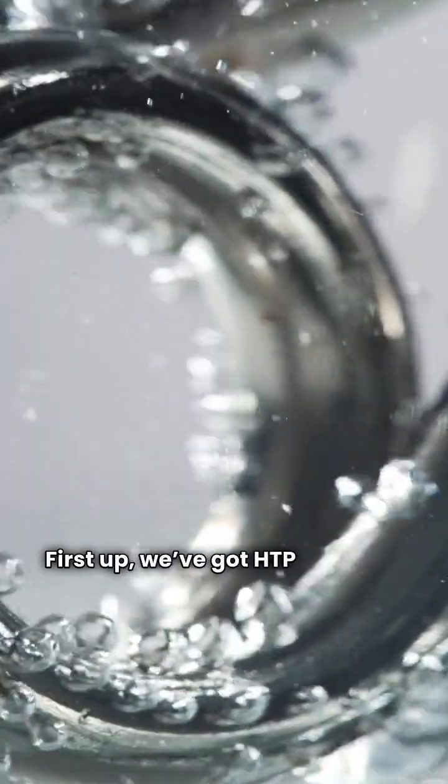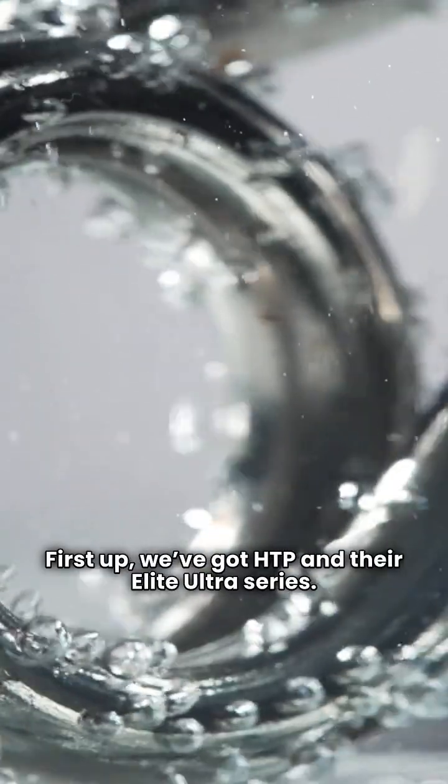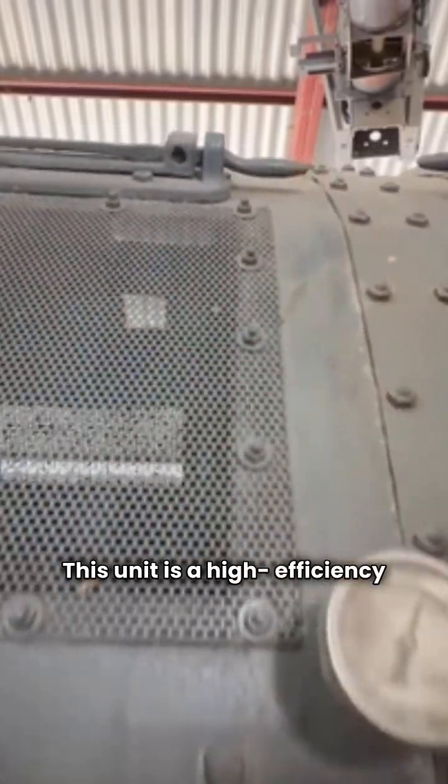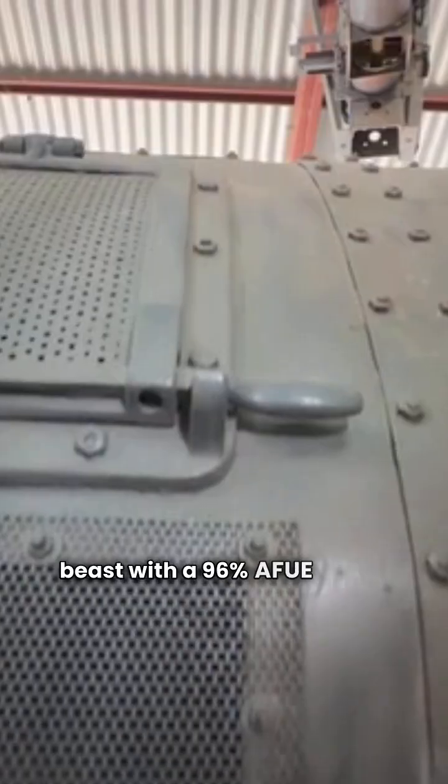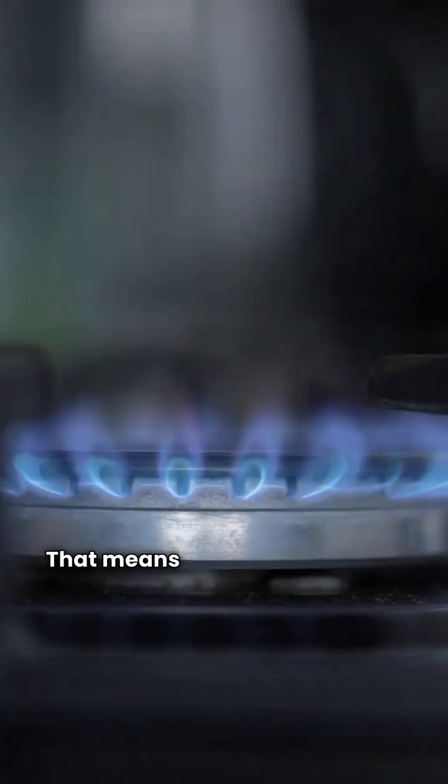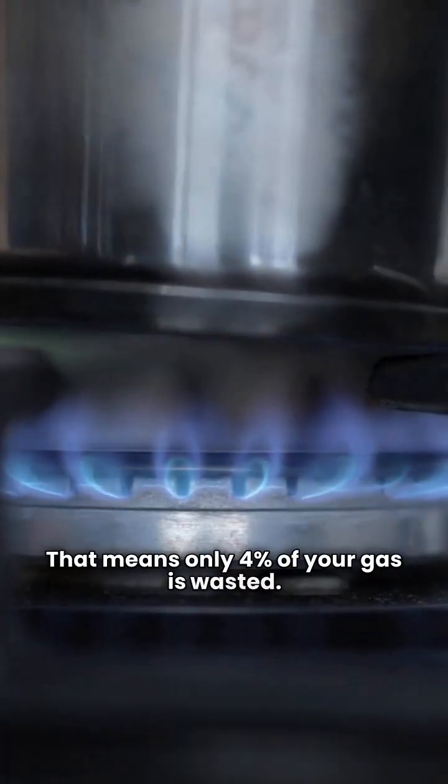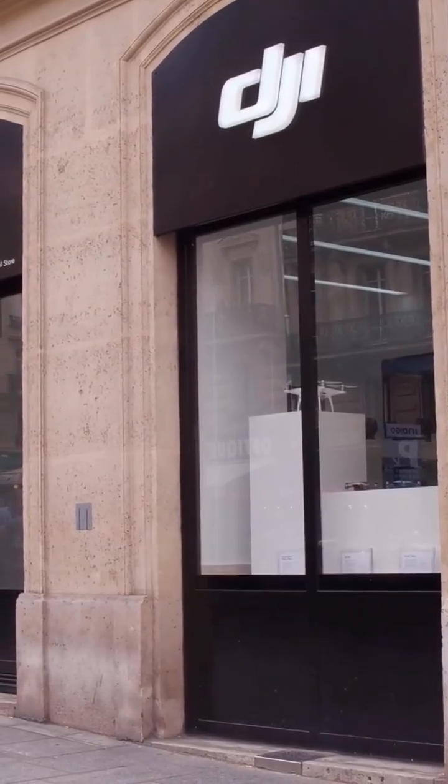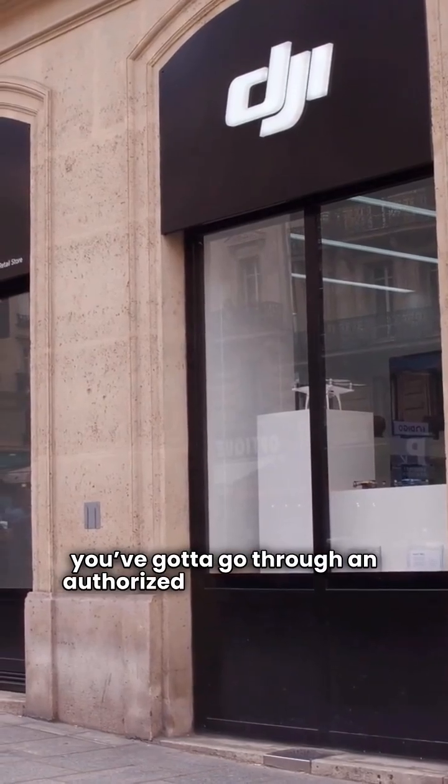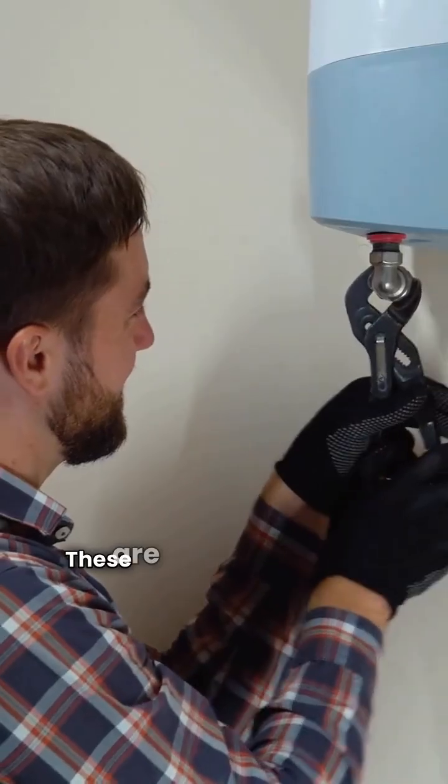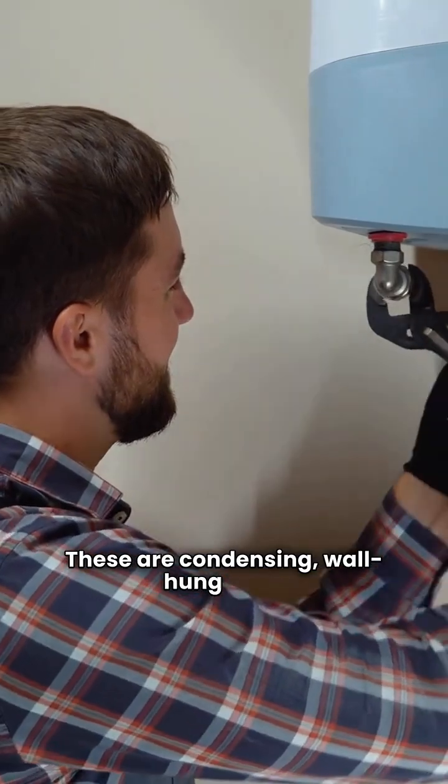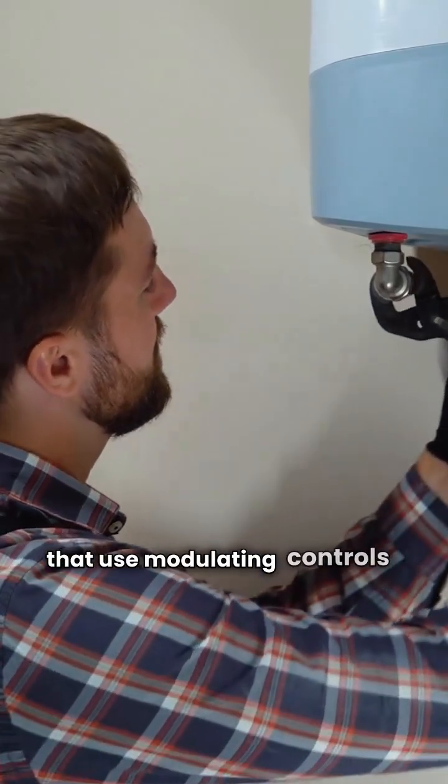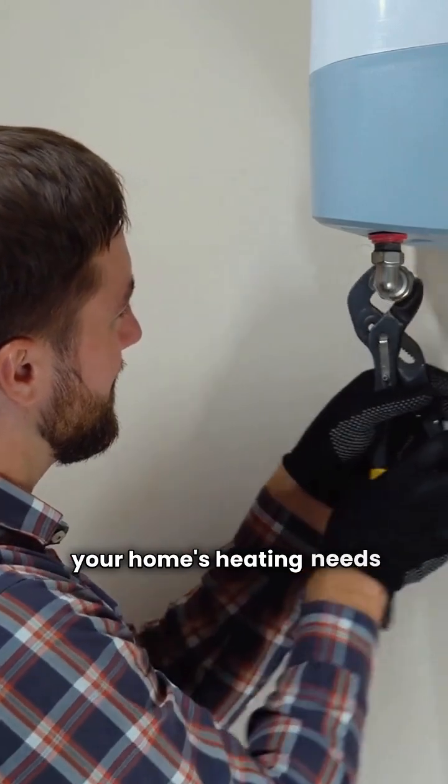First up, we've got HTP and their Elite Ultra Series. This unit is a high efficiency beast with a 96% AFUE rating. That means only 4% of your gas is wasted. It's made right here in the USA, but keep in mind, you've got to go through an authorized dealer to get one. These are condensing wall hung units that use modulating controls to match your home's heating needs perfectly.